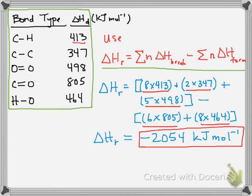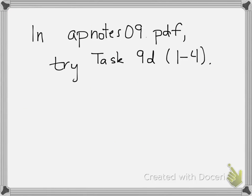So that's an example of how we can use bond enthalpies. And what I'd like you to try now is go back to the apnotes09.pdf file. This is on Schoology. And I want you to try task 9D. Try all four problems. And understand I'm going to be checking this before class starts and before we go over them. So I want to see your attempts. So make sure that you've attempted apnotes09.pdf task 9, 1 through 4. Have a great night and good luck studying for the quiz tomorrow.